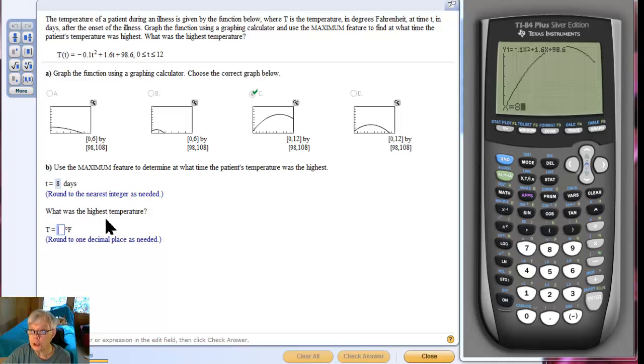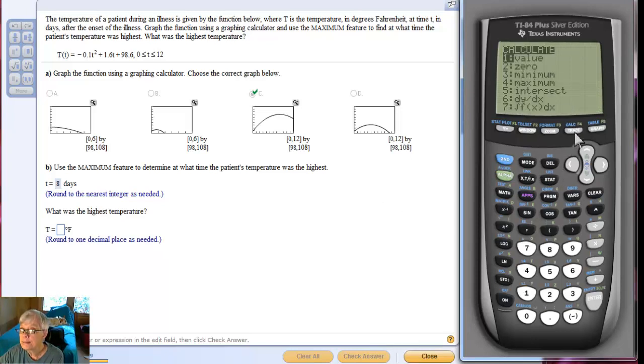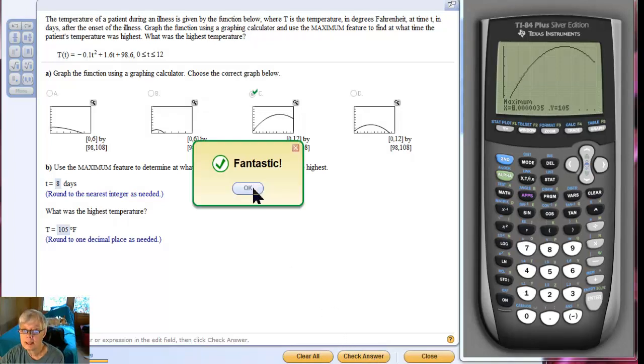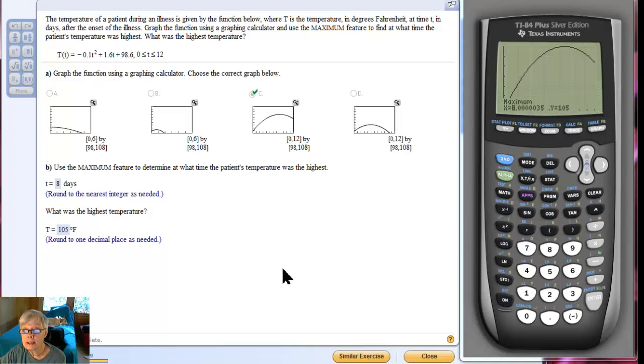Now, what was the highest temperature? If X is eight, Y is 105. I'll go to one decimal point, if needed. I'm going to do it again, just real fast, because I blew it. Second trace. Max. Left. Enter. Right. Enter. Enter. 105. Let's see what it does. We got that one right. Let's go on. It's always nice to get the right answer, you know?